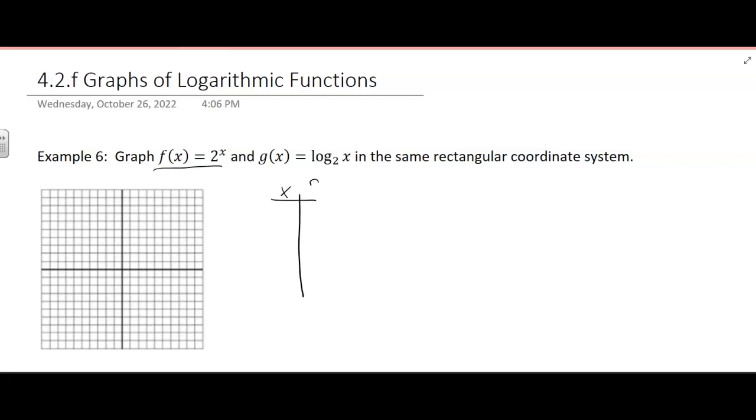So here's a function, an exponential function, and we've graphed that one before. So let's make a quick table of values here. We could put in like negative 1 and 0 and 1 and 2 and 3. The base is 2, so it's fairly small. And we get 1 half and 1 and 2 and 4 and 8.